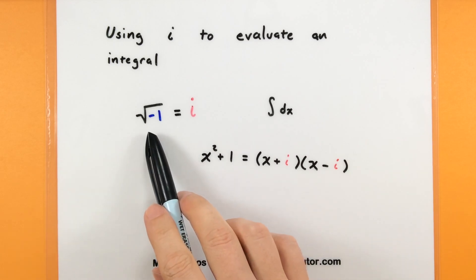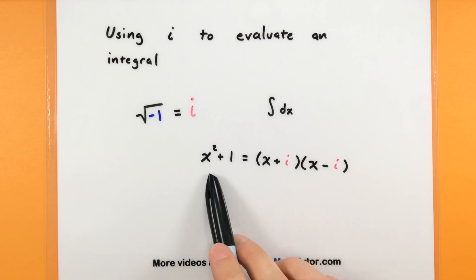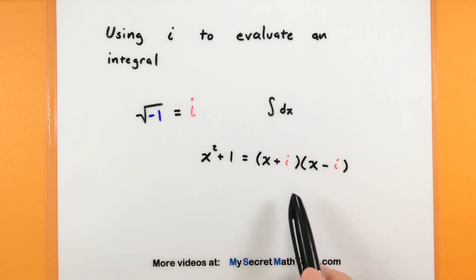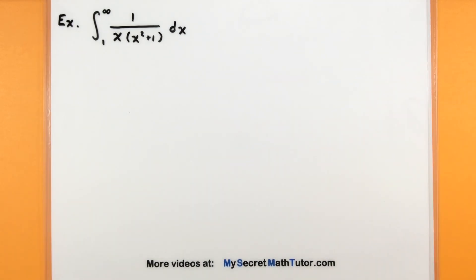Now, as you recall, the square root of negative one, that's what we're going to call i, and we can really use it in some interesting situations to break up things like x squared plus one into something like x plus i and x minus i. But enough talking, let's go ahead and look at the example I have in mind and how we're going to use our imaginary number to run through the integration process.